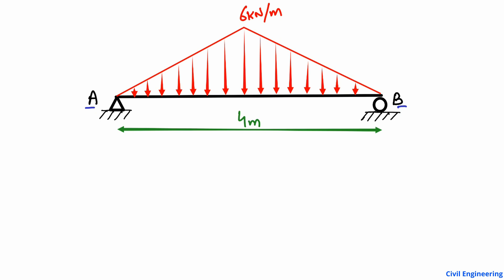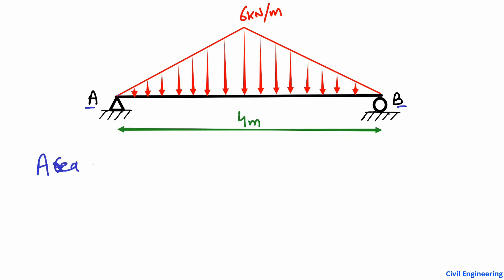To find the support reactions, first find the area of the triangle representing the load. You can see there is one triangle going this way and another triangle going the other way. We consider the whole triangle. The area of the total triangle equals half base times height.